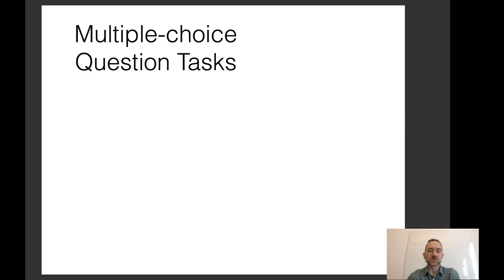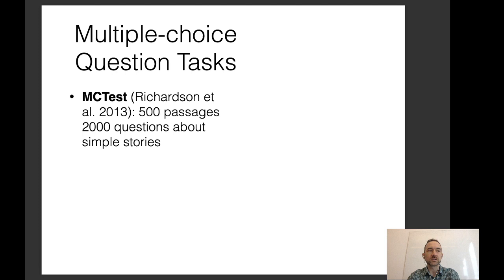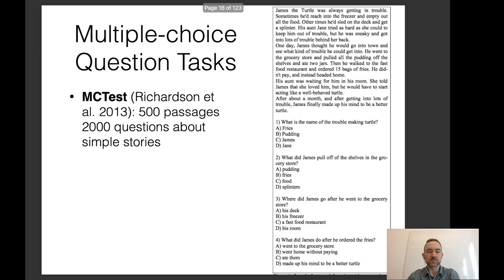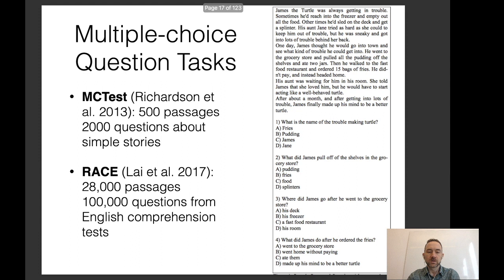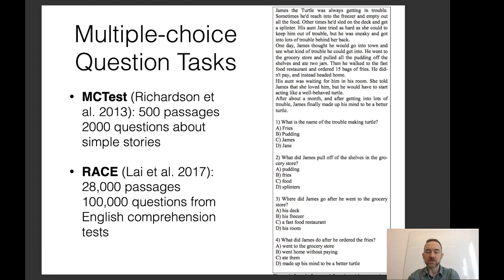For multiple choice question tasks there are a bunch of different datasets. For example, there's MC Test, which has 500 passages and 2000 questions about simple stories. There are also datasets like RACE, which has 28,000 passages and 100,000 questions from English comprehension tests. Notably, these are questions that are difficult to answer with general background knowledge — you kind of need the passage to answer them, which is a good desideratum for machine reading tasks. Basically, if you don't do the reading, you don't get the answer right.